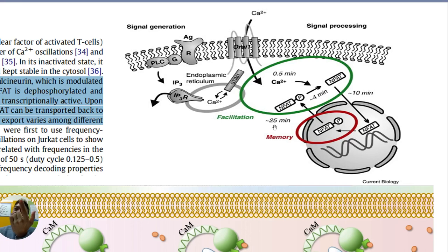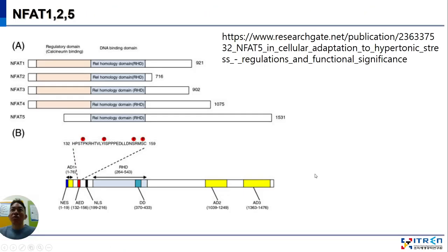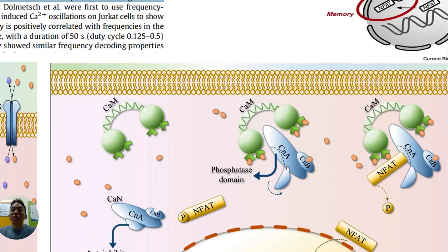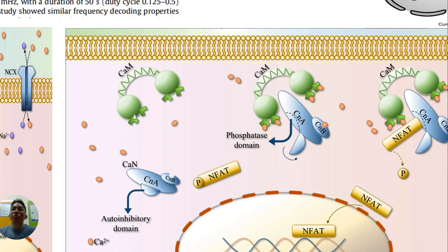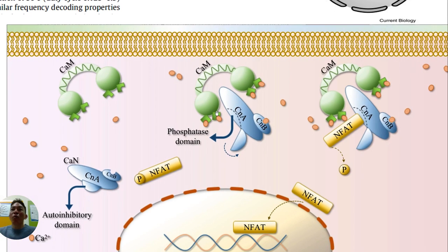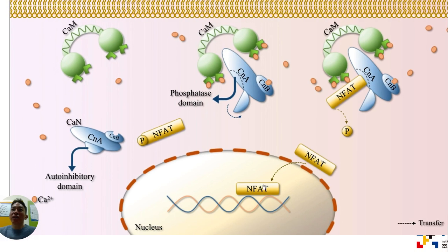Later, about 25 minutes later, NFAT can go back to the outside. So how does calcium dephosphorylate NFAT? When calcium level is going up, calmodulin and calcium bind together. While they are binding, this complex is mediated, NFAT binds to this side, and then it can be dephosphorylated and go inside the nucleus.